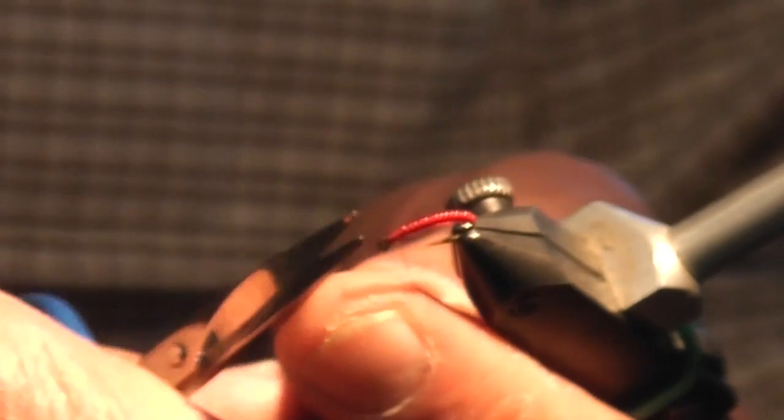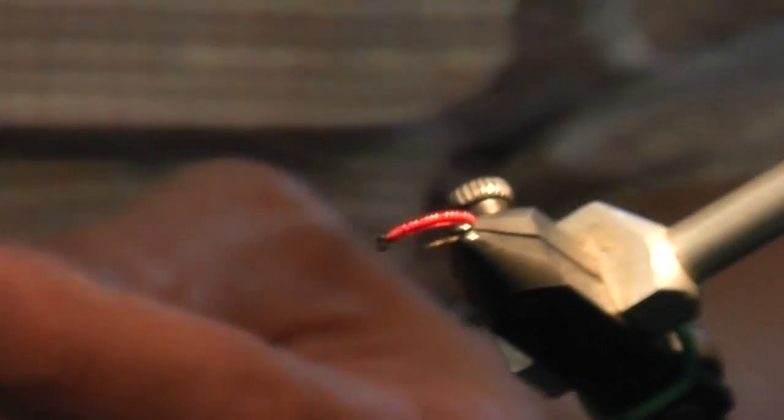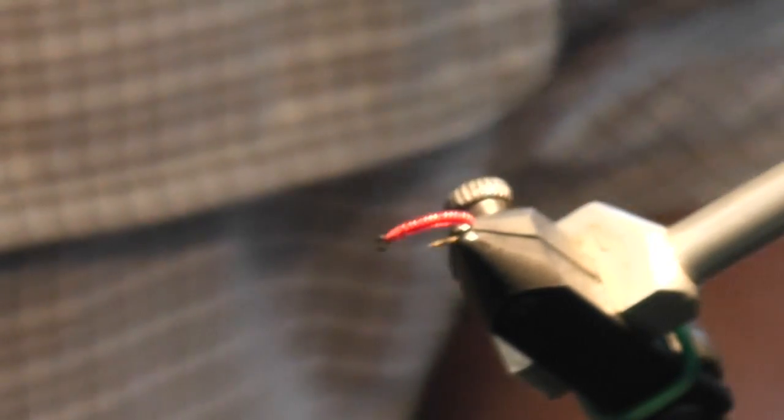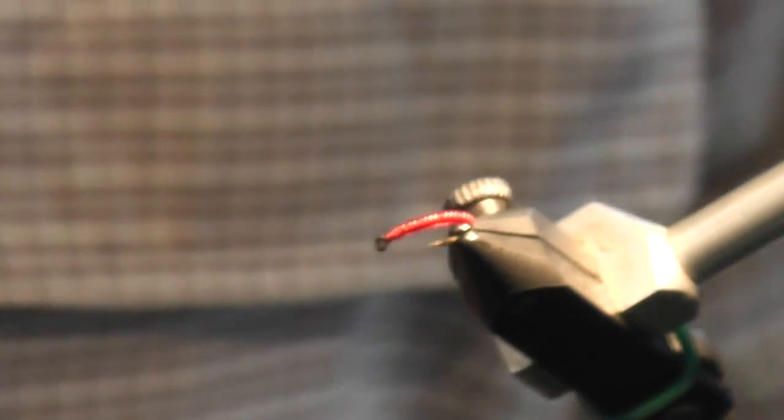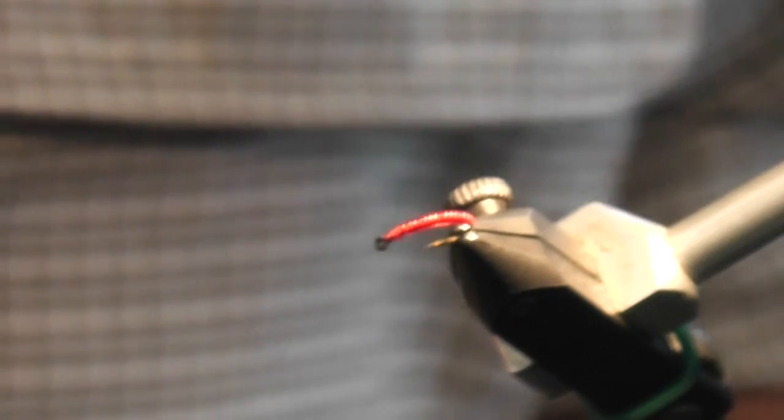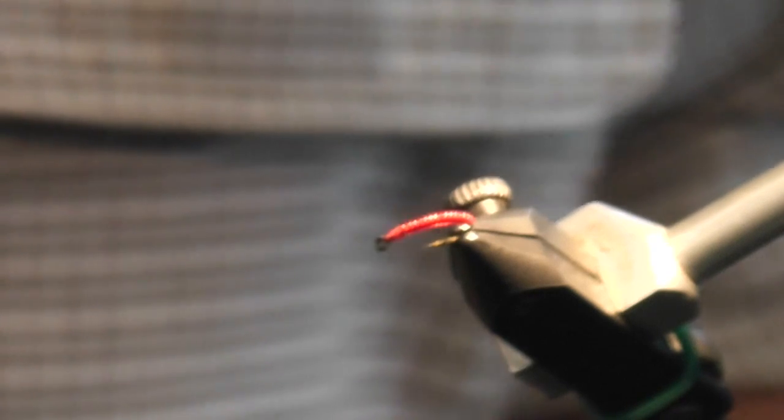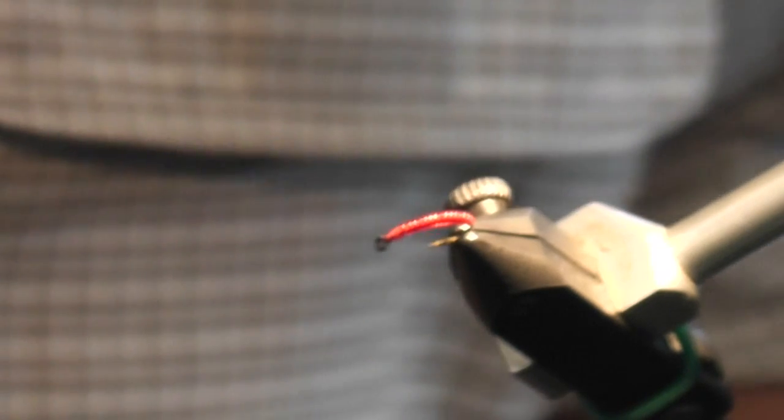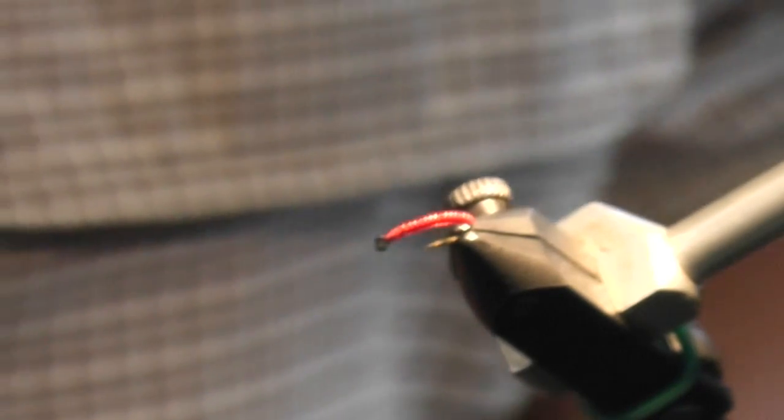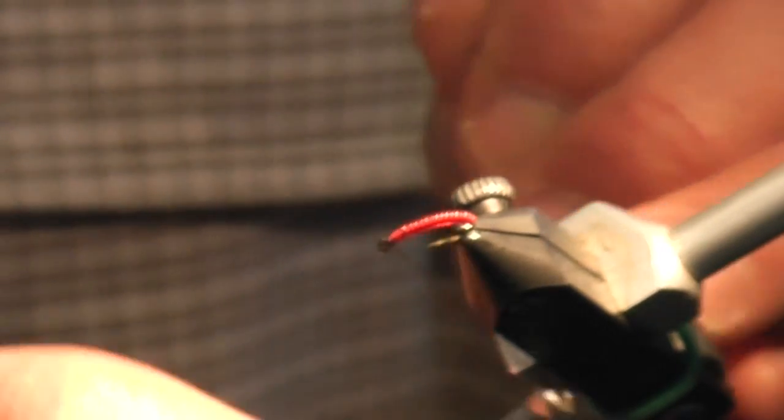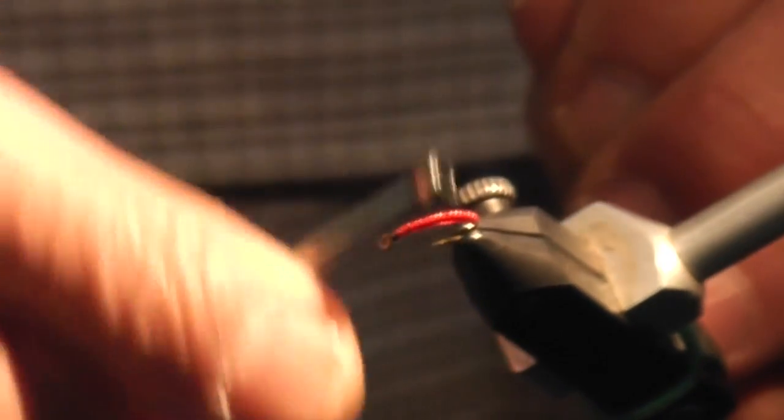You can fish the fly as is with a red head, but I've found that creating a prominent head with a contrasting color works better. I use either olive or black. Right now in Southern California, black is working better.